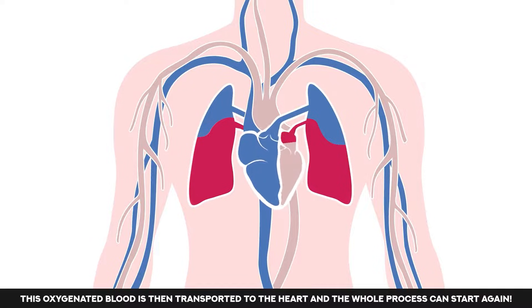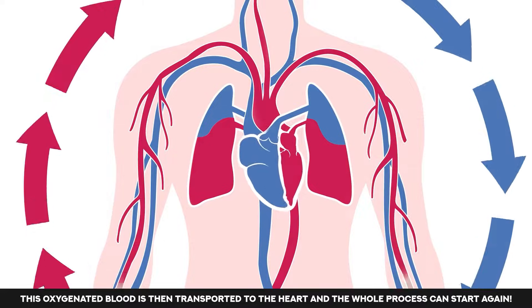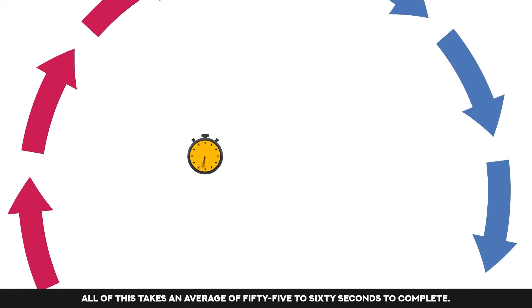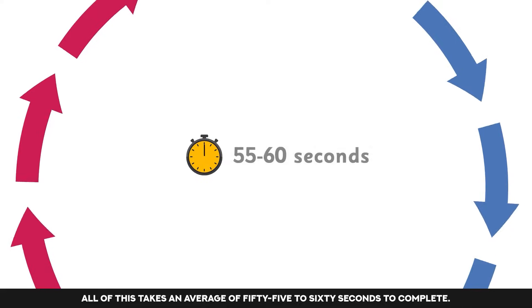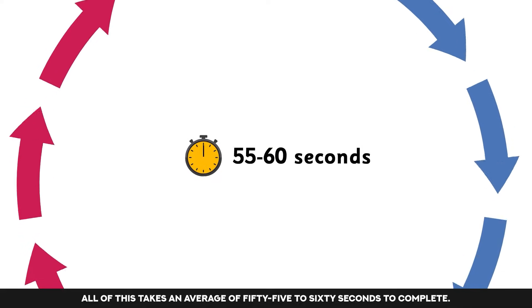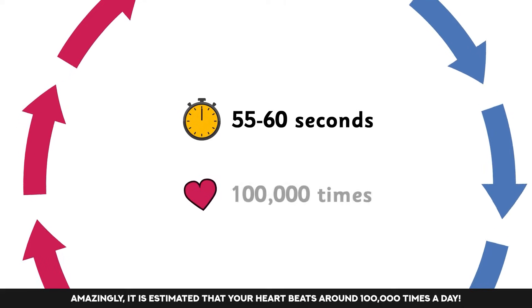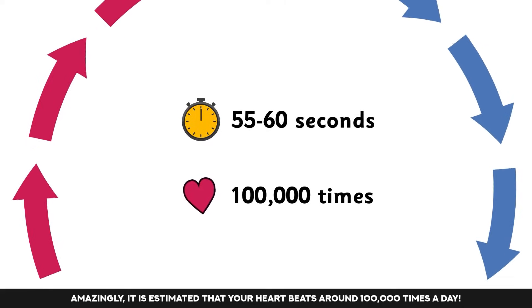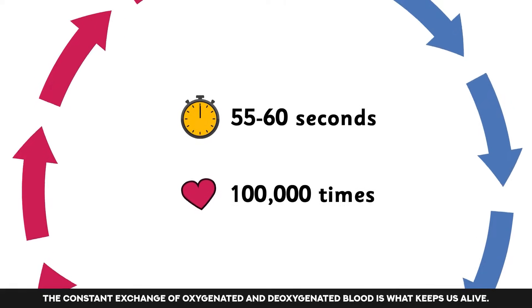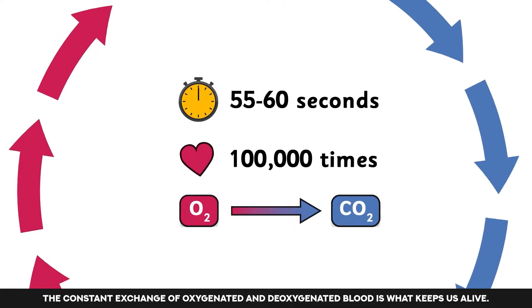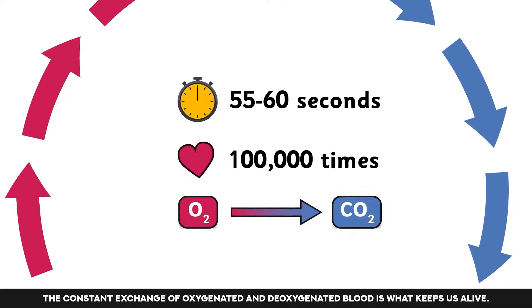This oxygenated blood is then transported to the heart and the whole process can start again. Even though there are a variety of stages within the process, all of this takes an average of 55 to 60 seconds to complete. Amazingly, it is estimated that your heart beats around 100,000 times a day. The constant exchange of oxygenated and deoxygenated blood is what keeps us alive.